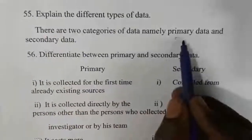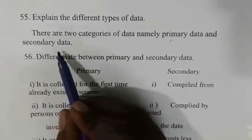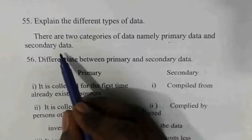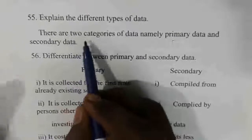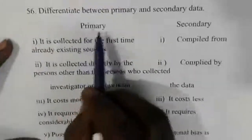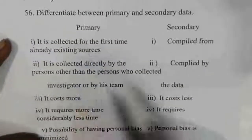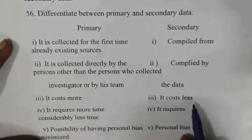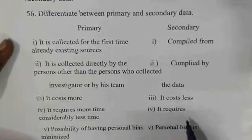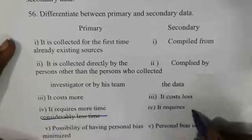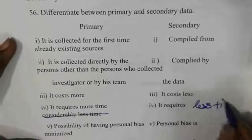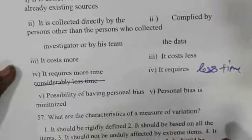Types of data — primary and secondary data: primary data is collected directly by the person. Secondary data is collected by someone else. Primary data costs more and requires more time. Secondary data costs less and requires less time — it is just the reverse.